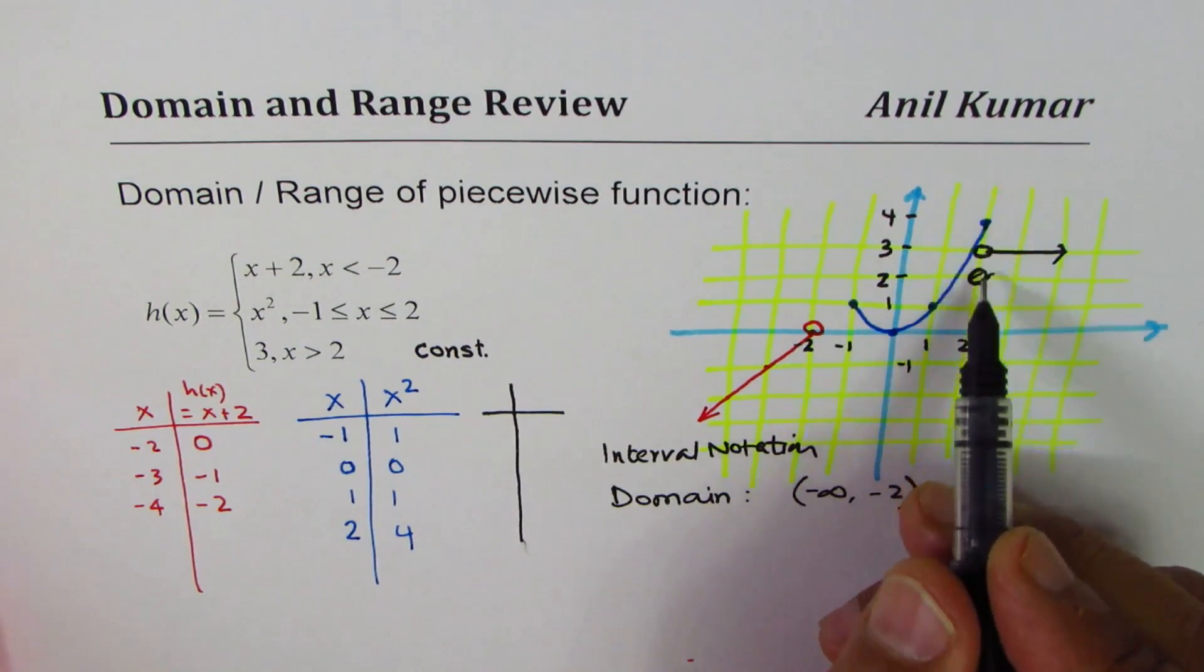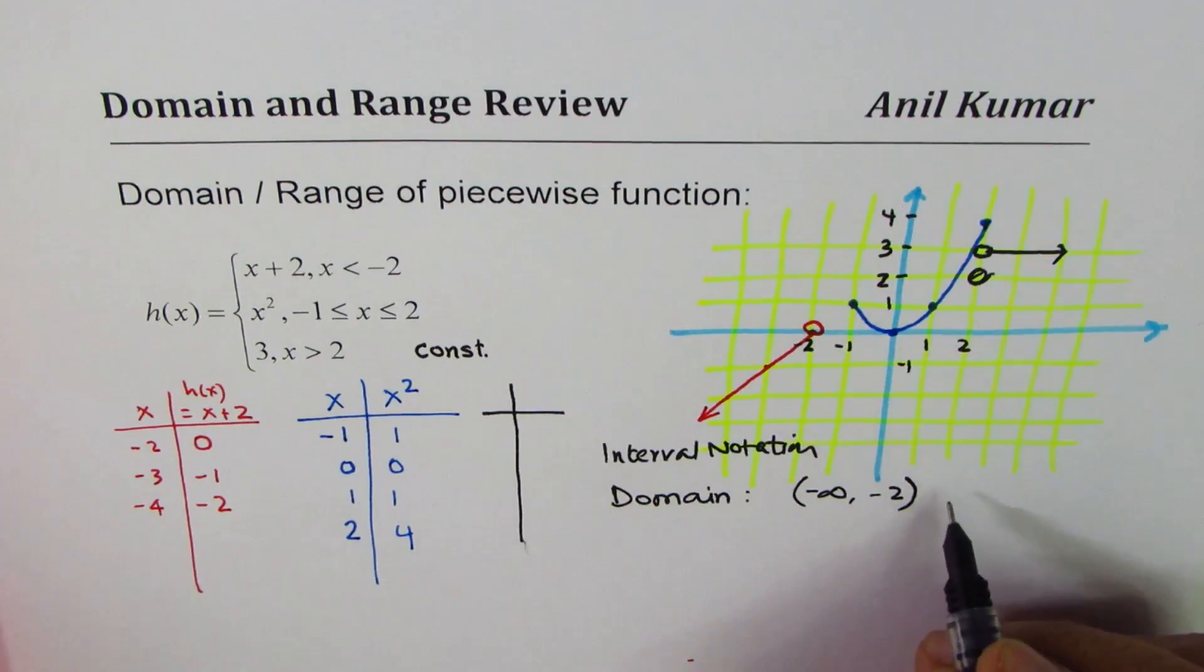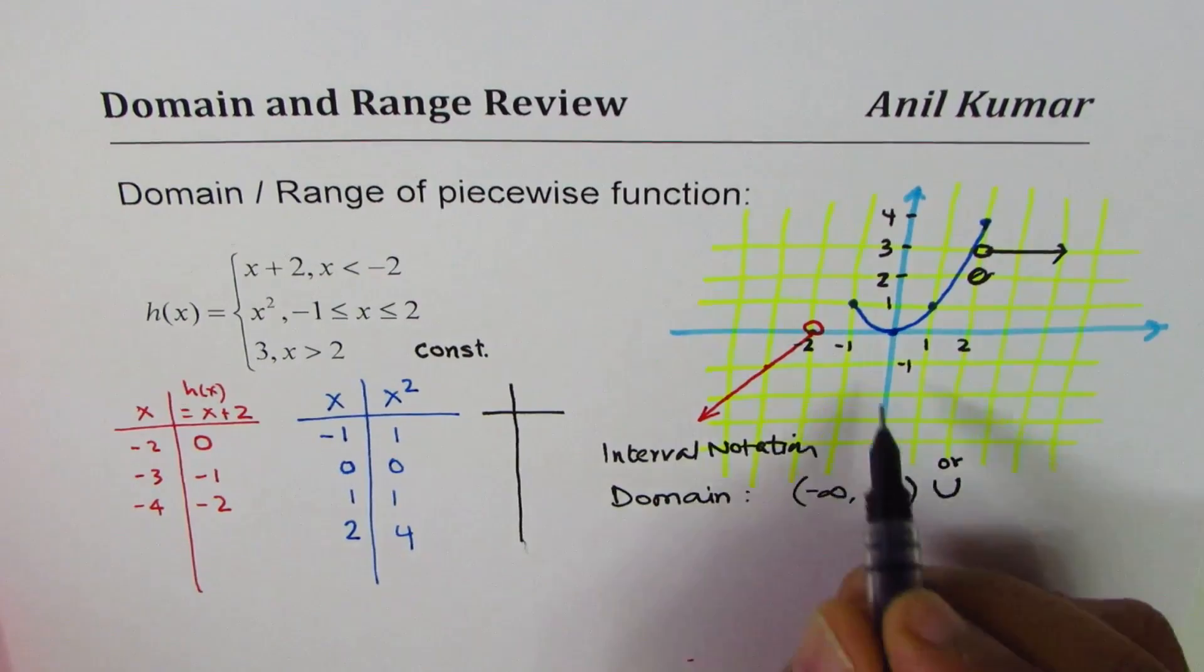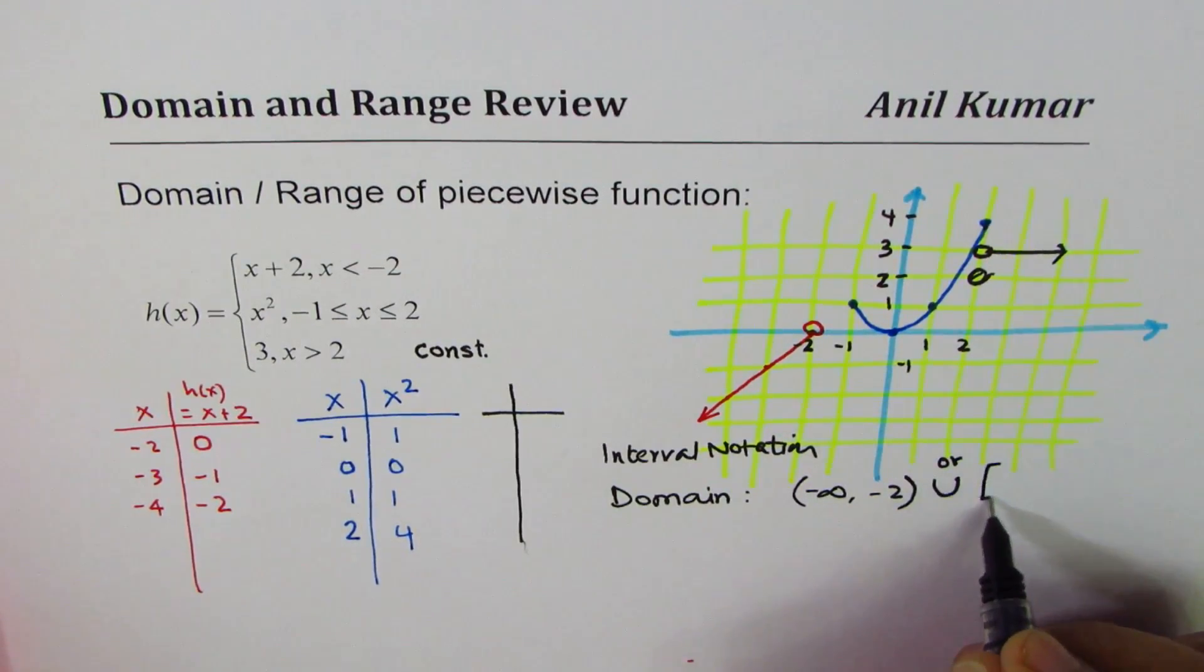So there is no break in the domain at this stage. So we could say union. Since minus 1 is included, we'll have that square saying included to infinity. You can never include infinity. So that becomes the domain.